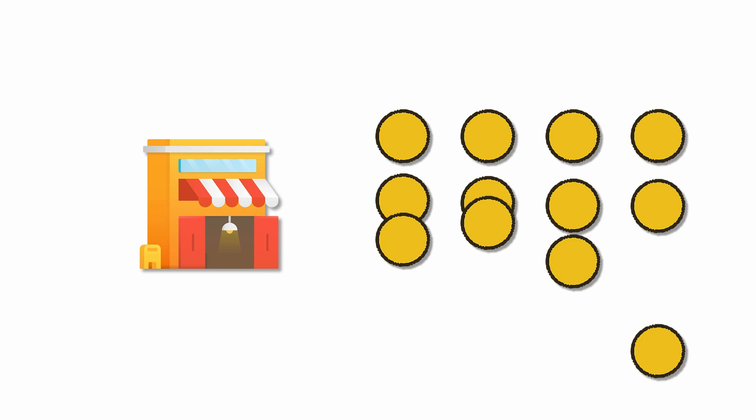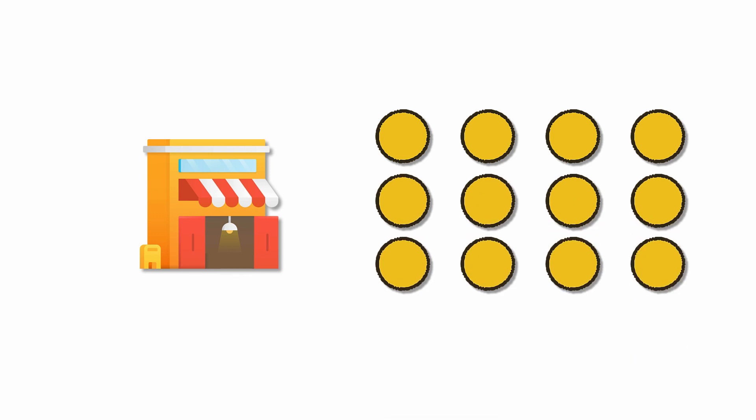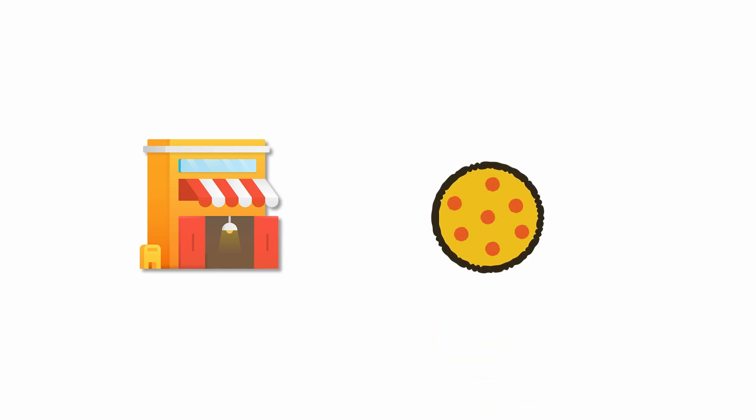Pre-rendering is like when a restaurant decides to make 12 pizzas in the morning for the lunch rush. They're predicting that lots of people are going to want a cheese pizza delivered, so when someone calls for a cheese pizza, there's nothing to do. Server-side rendering is more like when you call the restaurant and order a pizza and they make it right when you order and deliver it to you.